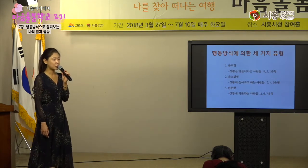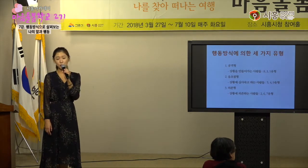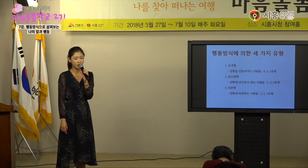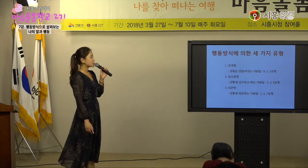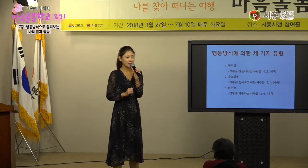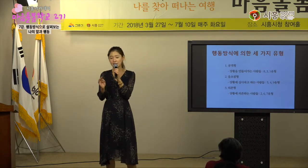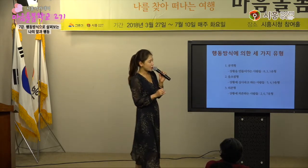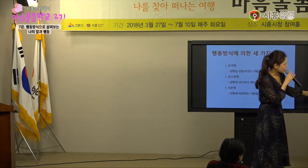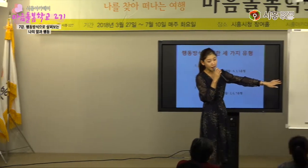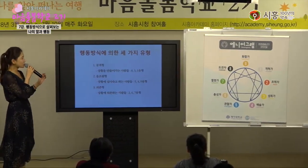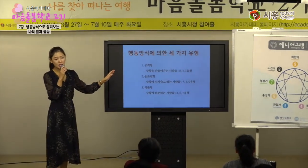검사지에 나와 있는 가장 높은 점수가 나의 유형이랑 일치하지 않는 경우들을 많이 보실 수 있을 거예요. 그래서 개인적으로 추천해드리고 싶은 방식은 먼저 힘의 중심을 찾는 거예요. 내가 머리형인가 가슴형인가 장형인가 찾고, 그 다음에 내 행동 방식이 뭔가 관찰해서 찾아보는 거죠.